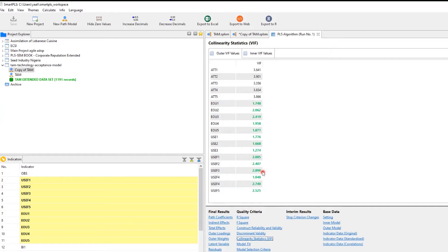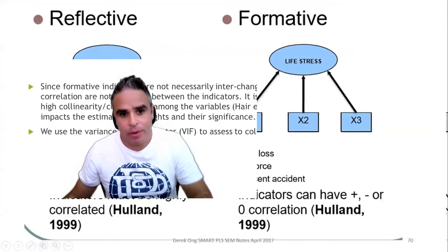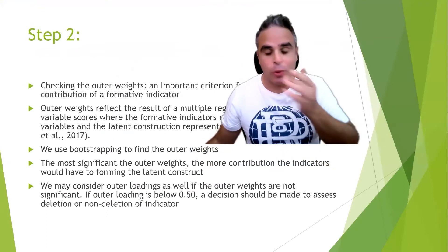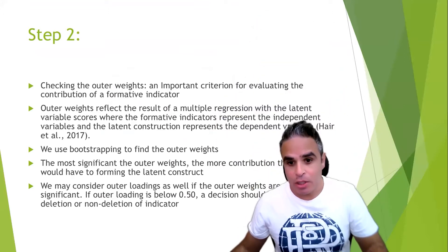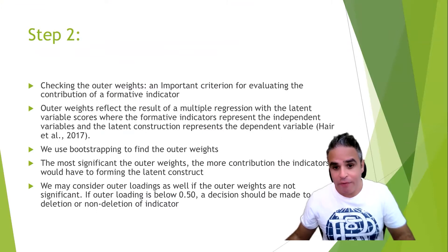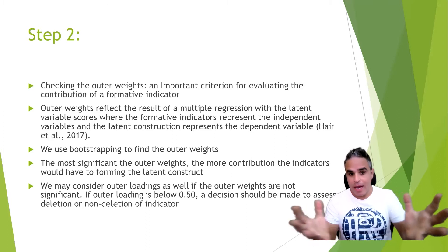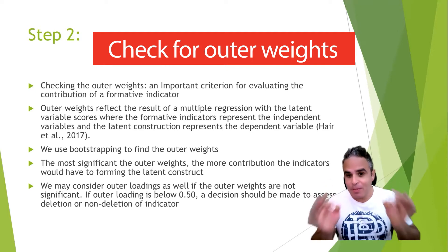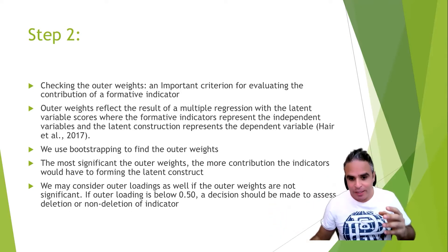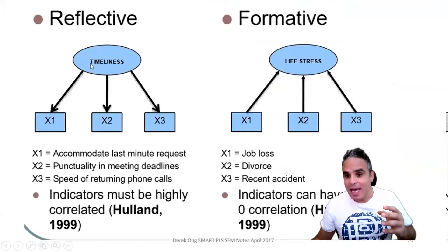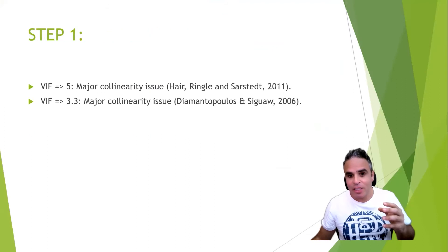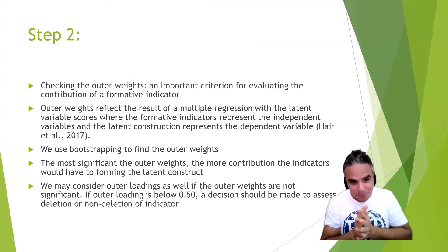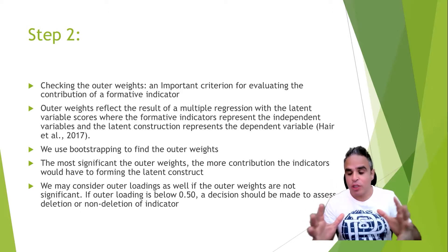Step one is done. Now let's move to step two: check for the outer weights. Outer weights reflect the result of a multiple regression with the latent variable scores, where the formative indicators represent the independent variables. In our example, life stress is the dependent variable and its indicators are the independent variables — showing a multiple regression relationship.